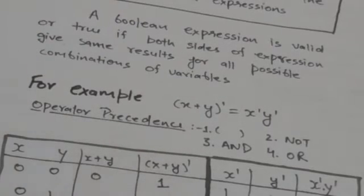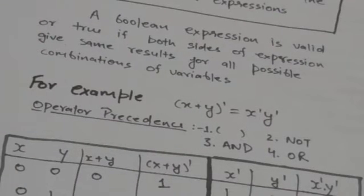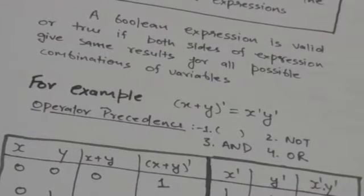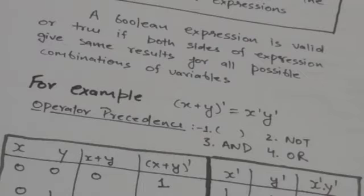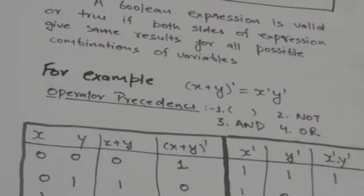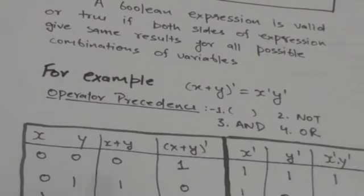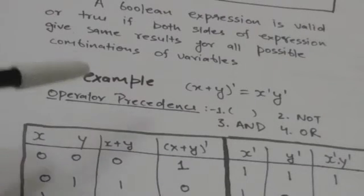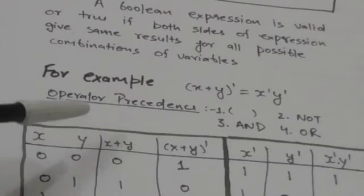Now we have to prove the validity of this expression by truth table. We have to prove that both sides of this expression give the same results for all possible values of X and Y.